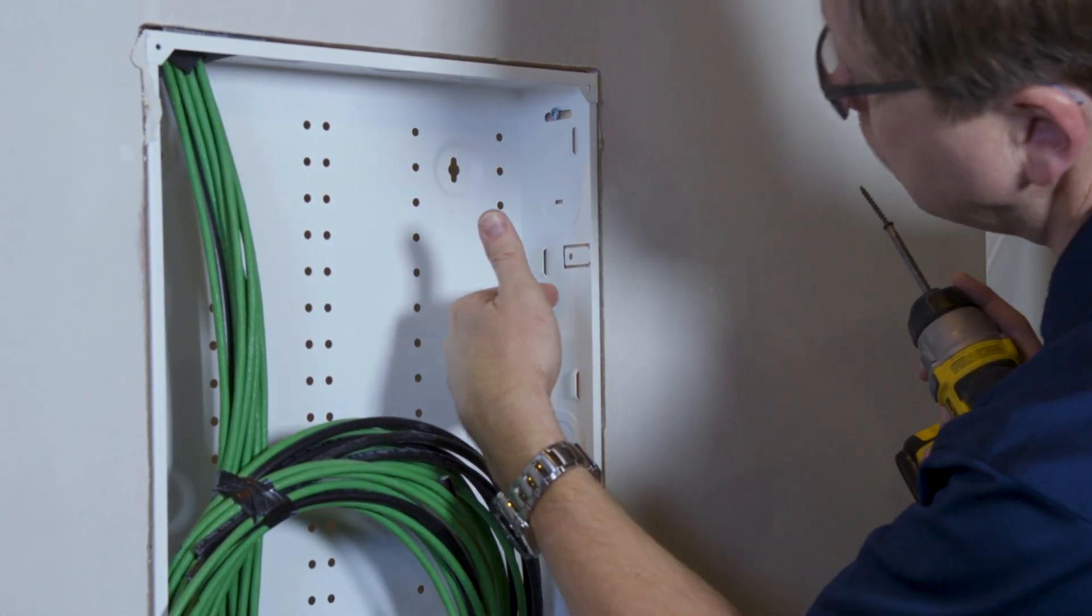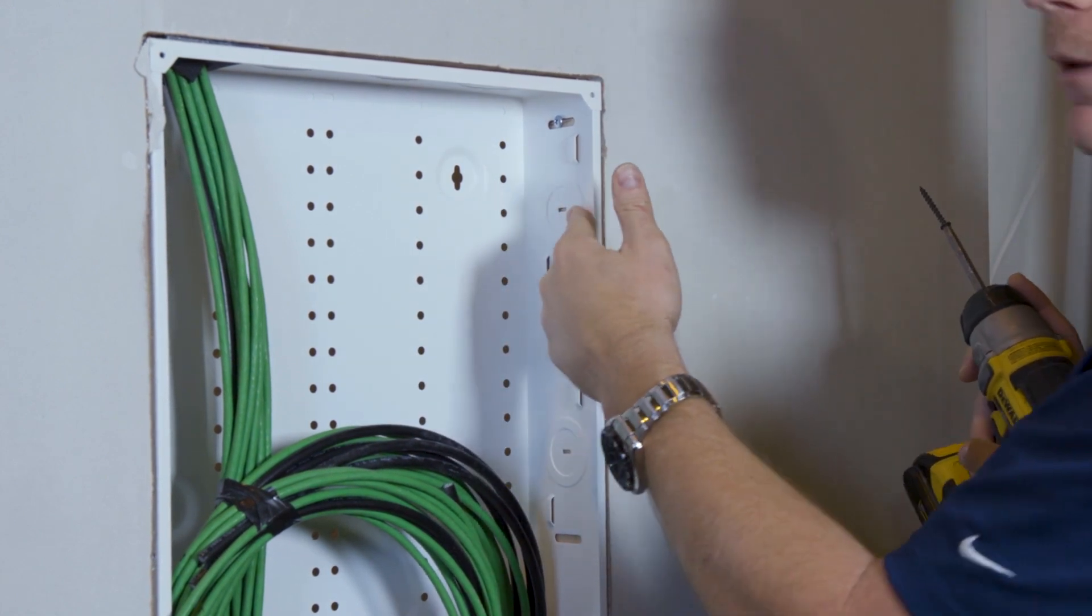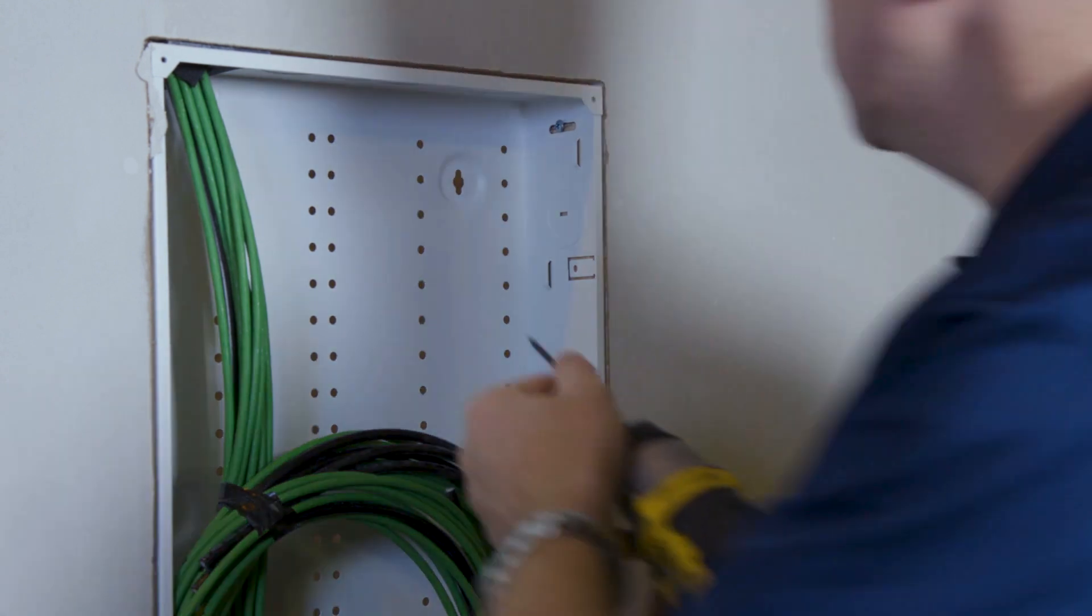If we just put a screw through here, through one of these slots, it would warp the box. So we provided these which will give, and they'll hold the depth, they'll lock it in place. So I'll go ahead and put in some screws now.